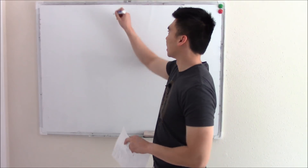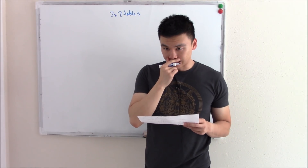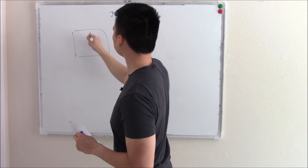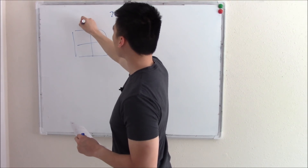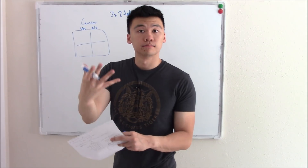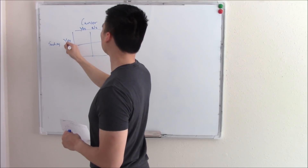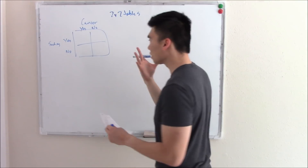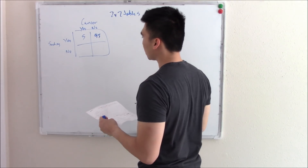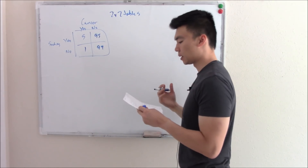This video is on two by two tables. Let's say you want to do a study that looks to see how many smokers develop lung cancer. You draw a table with the disease — cancer — on top, and the risk factor — smoking — on the side. In a hundred smokers, five people developed lung cancer, meaning 95 people didn't. In a hundred non-smokers, one person developed lung cancer; 99 people didn't.